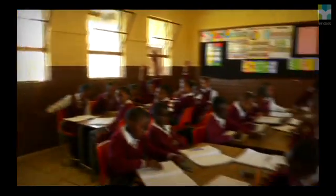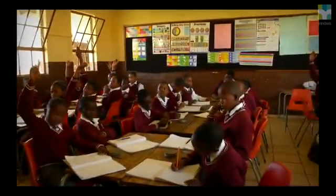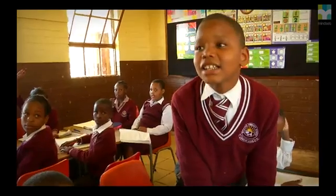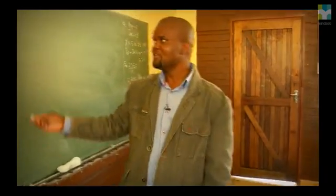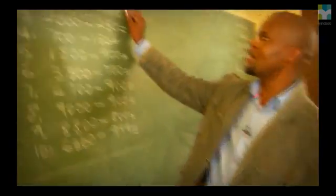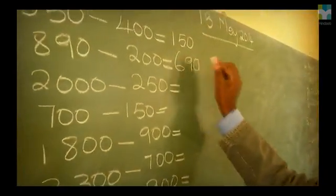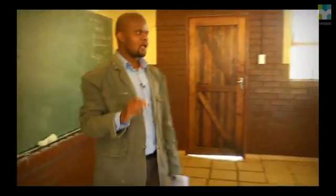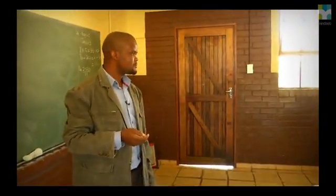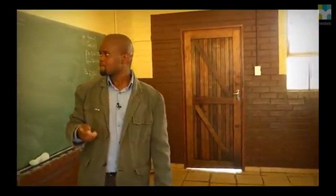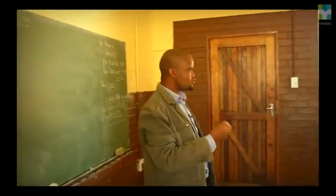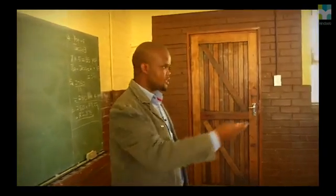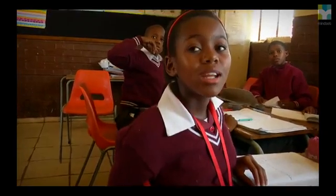290, you subtract 200 — that's 690. That's correct, it's going to be 610. And then the third one is 2000, you subtract 250 — that's 1,750.